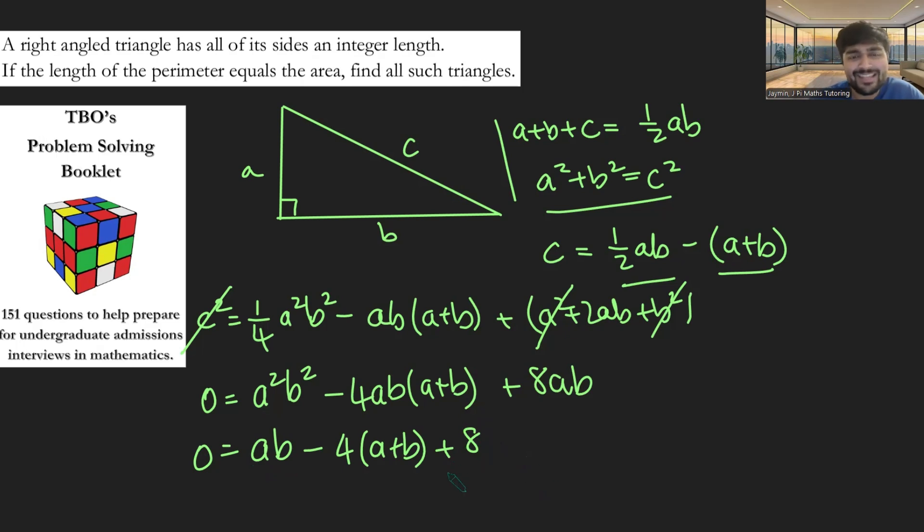And now you may wonder, well, what do I do with this? Well, notice that if I'm going to do something a bit interesting on both sides, I'm just going to add 8 on both sides. So this side becomes 8, and this side becomes 16. Why have I done that? Well, now the right-hand side factorizes super nicely. This is just A minus 4 times B minus 4 equals 8.